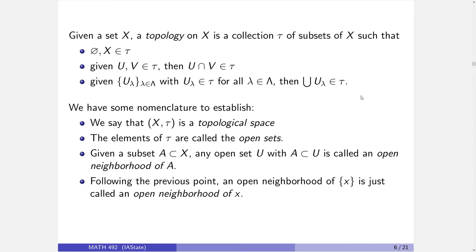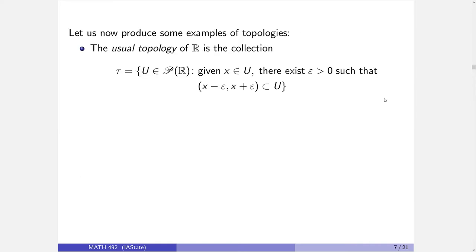Now that we've got what a topology is set up, we want to start exploring and studying. A good way to start is to look at some examples. We've already got one: the usual topology of the real line is the collection of subsets — this is my notation for the power set — where U is in here means it's a subset of the real line. How did we define open? Given an element that lives in U, there is an epsilon so the interval lands in here. As we just proved, this forms a topology on the real numbers: the empty set is in here, the whole set is in here, intersection of any two elements is in there, and the union is in here.